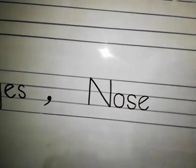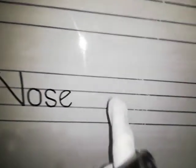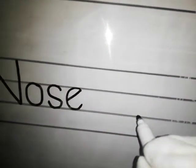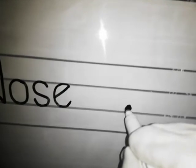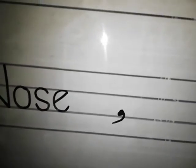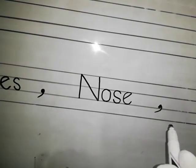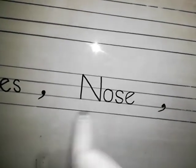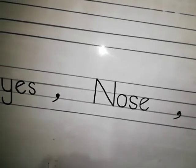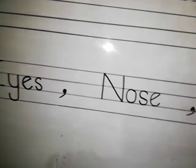After writing eyes and nose with commas, our next sense organ name is ears. Leave a one-finger gap, put a comma, then write ears. The spellings of ears you have also done in your nursery class in parts of body. It is a very easy answer.